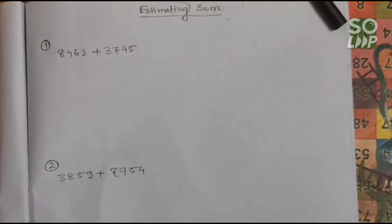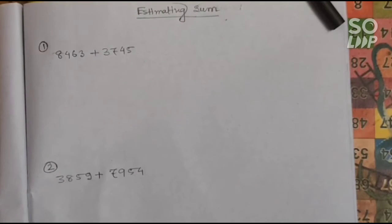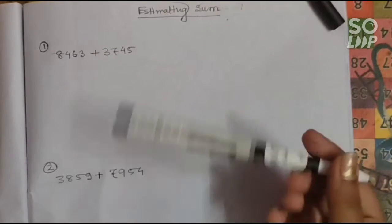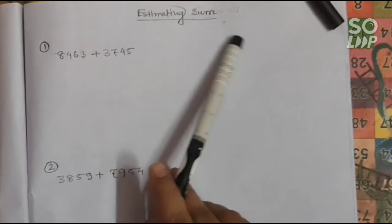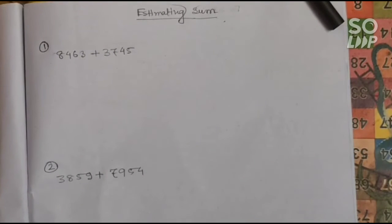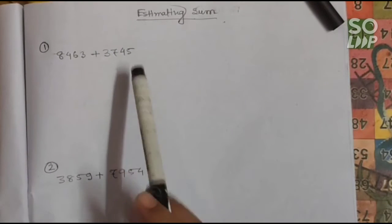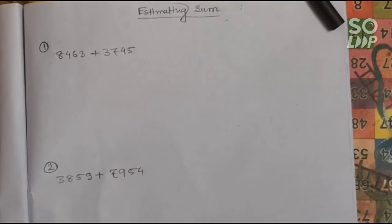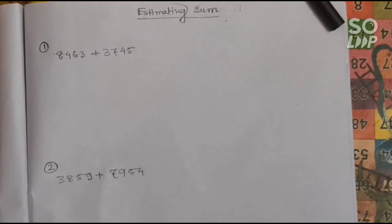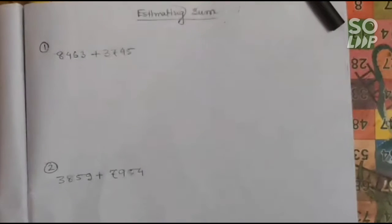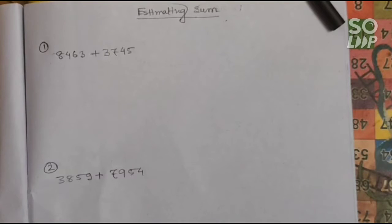Hello everyone, welcome to maths class. In this video you are going to learn about estimating sums. Estimating sum means you have to estimate the total value to its nearest tens, nearest hundreds, or nearest thousands. Estimate means you have to guess the sum — you have to find the guessing total value.